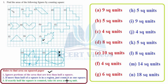For part A, counting the complete squares: one, two, three, four, five, six, seven, eight, and nine. So nine complete squares — therefore the area is 9 square units. For part B, we count one, two, three, four, five complete squares — therefore the area is 5 square units.